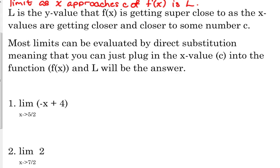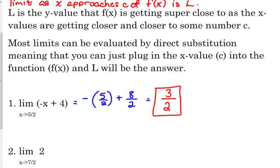Number one says: the limit as x approaches five halves of negative x plus four. All we're going to do is plug in negative five over two for x. That gives us negative five over two plus four — four is eight over two — so the answer is three over two. The y values are approaching three halves. If x were approaching three instead, the limit would be one — so it's value specific.